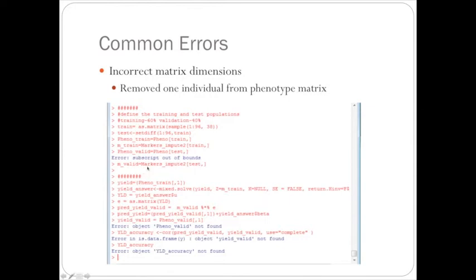And usually the subscript out-of-bounds will come up, and this says that you have more individuals in your marker than phenotype matrix, and the matrices cannot multiply then. And then as you keep on running the code, the correlations are mixed.solve will not run.